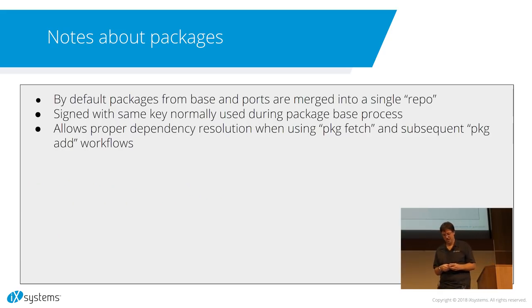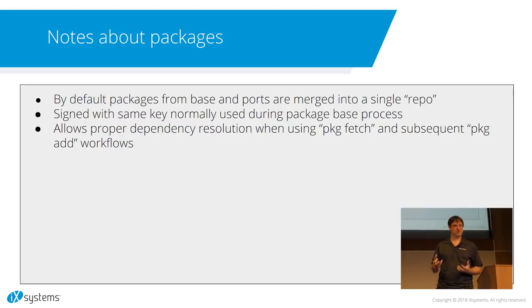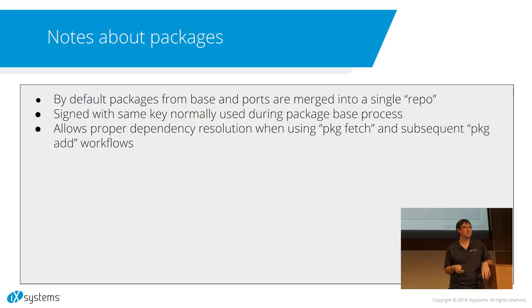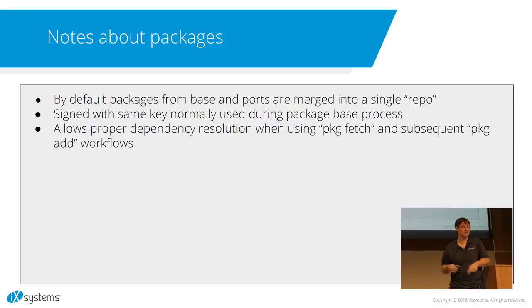A couple notes about packages. If you've used package base, most of you will find you have two repos — a FreeBSD base repo and your ports tree repo. We decided to take them and merge them all into a single repo. This is important for dependency resolution. We have use cases where we do package fetch and then package add. Package add is not as intelligent as package install — it's not going to detect and resolve dependencies when installing off disk, and they have to all be in the same directory. We just wanted them all in one repo so everything works properly.